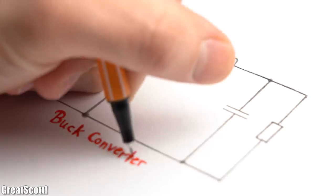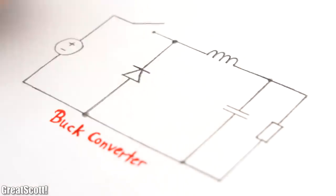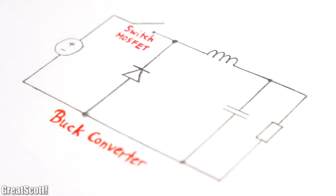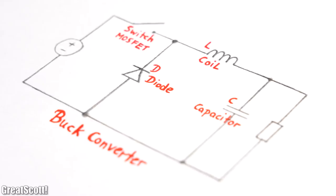If we now take a look at the simplified circuit diagram of such a converter then we can see that it only requires a switch like a MOSFET, a diode, a coil and a capacitor to build it.